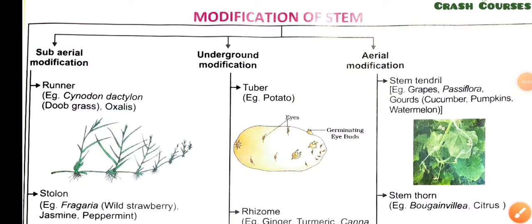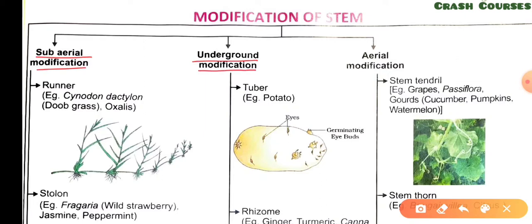Hello students, welcome to the crash course. In this session we will discuss modification of stems. We have divided stem modification into three parts on the basis of position of modification: the first one is sub-aerial modification, the second one is underground modification, and the third one is aerial modification. Now in sub-aerial modification, as the name suggests, some parts are in air and some parts are on the ground.